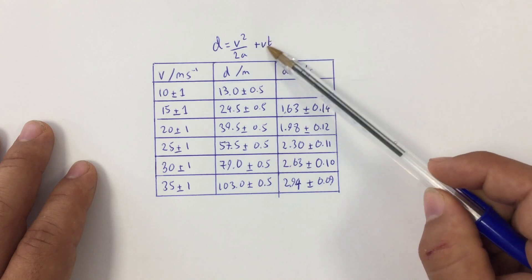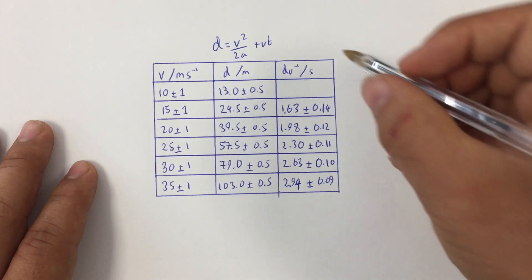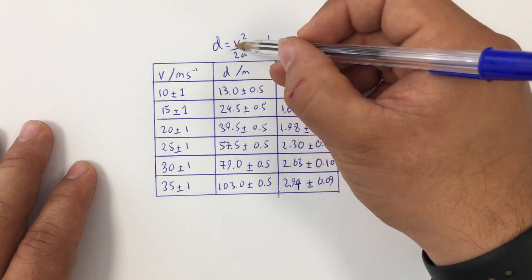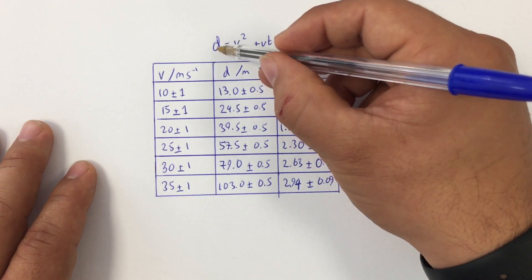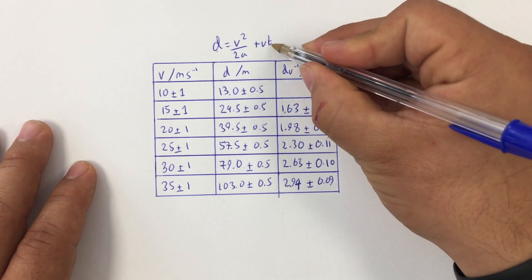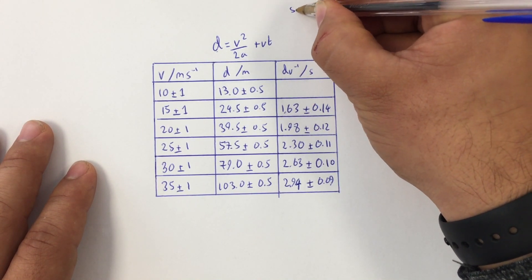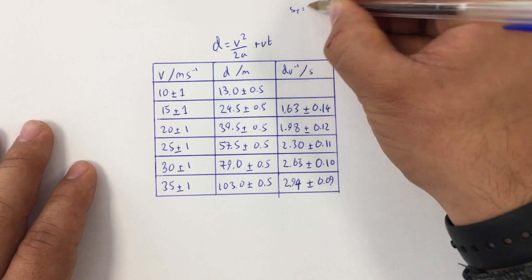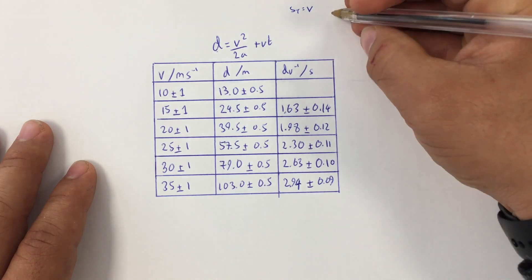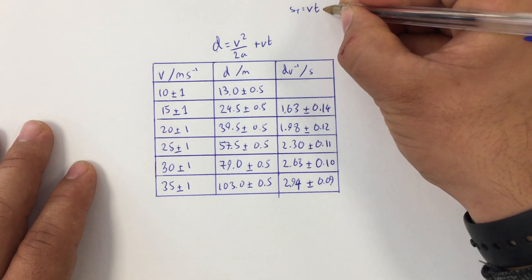vt is the thinking distance. So stopping distance is braking distance plus thinking distance. The thinking distance just depends upon the initial velocity v and the thinking time.